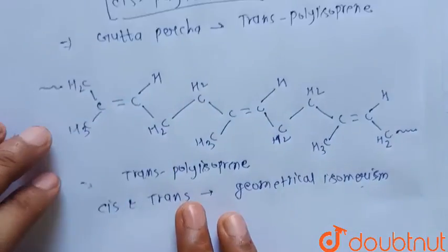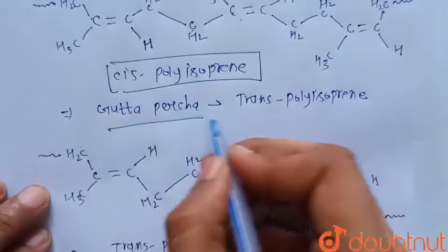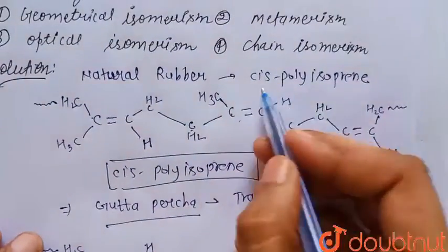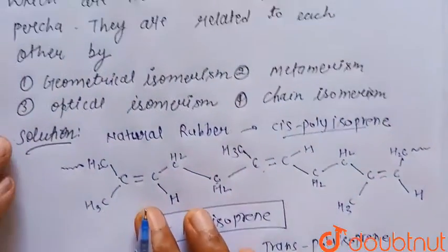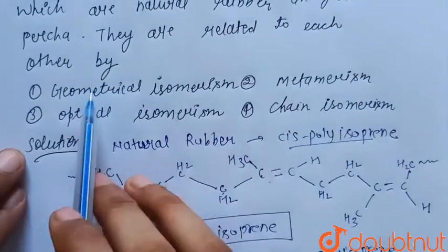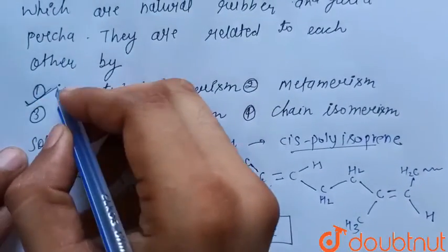So we get that gutta percha is trans polyisoprene and natural rubber is the cis polyisoprene, hence they are related to each other by the geometrical isomerism. Hence option first is the correct choice, thank you.